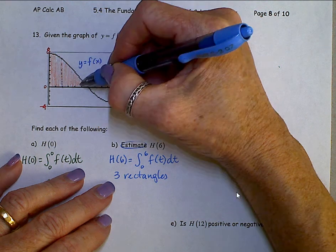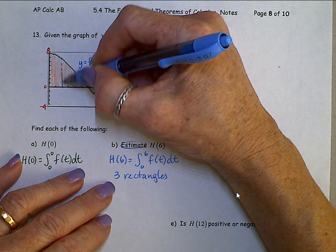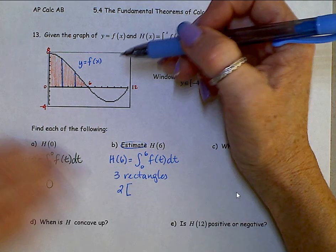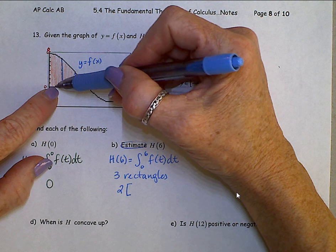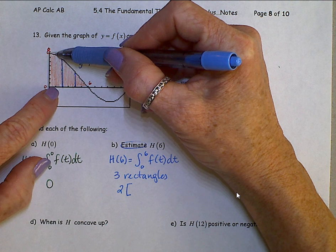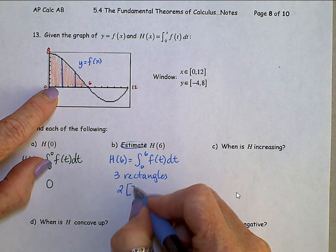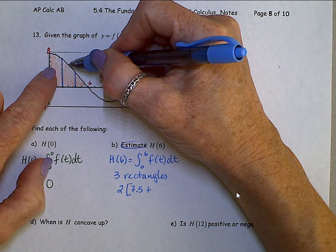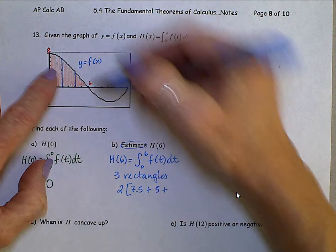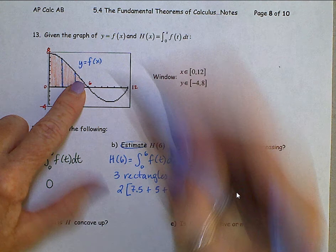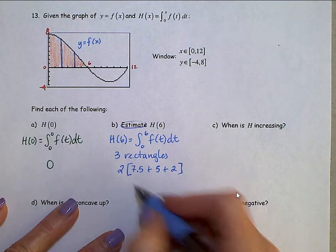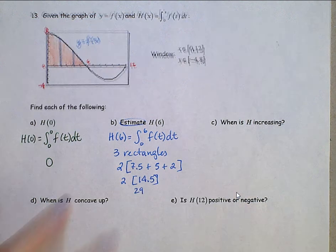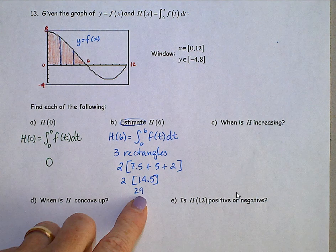What we can do is estimate h of 6 by using three rectangles. Let's divide this up into three regions here. Each region is 2 wide times the height. Let's use midpoint height, those are the most accurate. So I see a height here of about 7.5 or so, plus this middle rectangle, maybe a height of 5, plus this last rectangle here, height 2. That's going to give us 2 times 14.5, which is 29. So h of 6 is approximately 29.